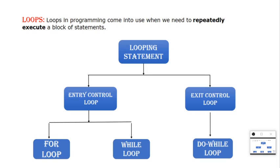Loops are nothing but repeatedly executing a block of statements. If you want to execute a block of statements repeatedly, we use loops. Looping statements are further divided into two categories: entry control loop and exit control loop. Entry control loop means the condition will be at the top of the body, and exit control loop means the condition will be at the bottom. Entry control loops include for loop and while loop; exit control loop includes do-while loop.